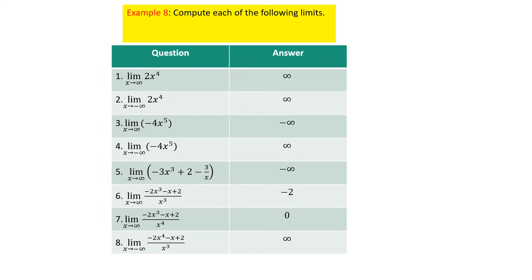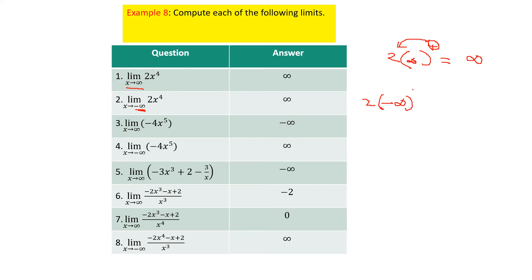For example, compute each of the following limits. Question one: the limit as x approaches infinity of 2x to the power 4. Substituting infinity gives 2 times infinity to the power 4, which is a very large number, so the limit equals infinity. Question two: substituting minus infinity gives 2 times minus infinity to the power 4, and since the even power makes it positive, multiplying by 2 again gives infinity. Questions 3 and 4 follow the same idea.